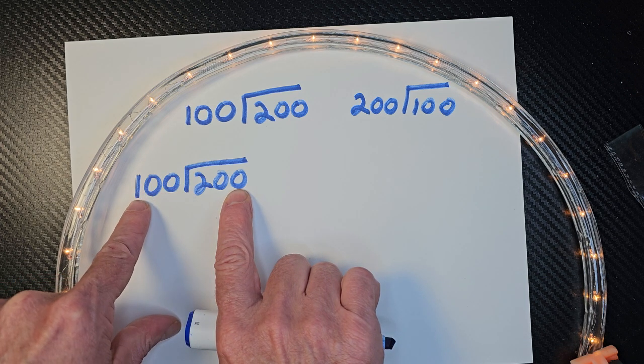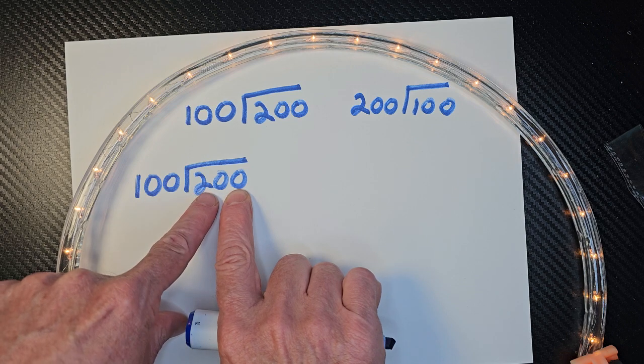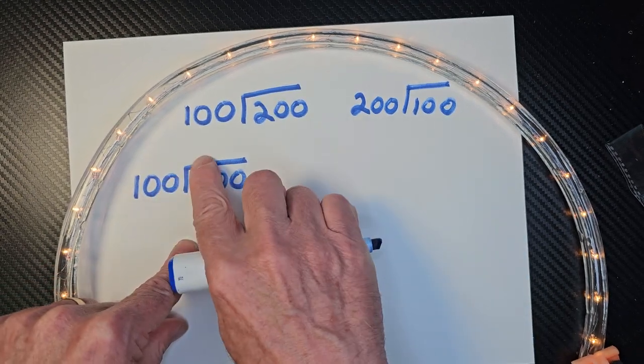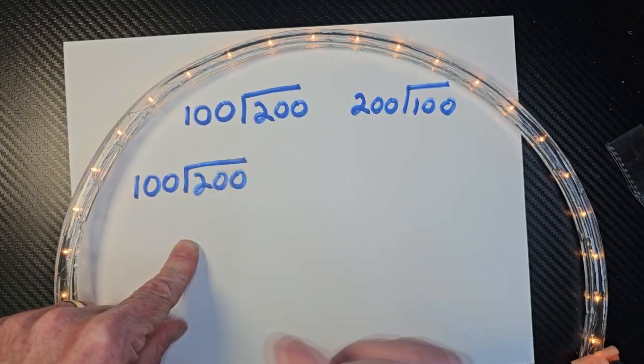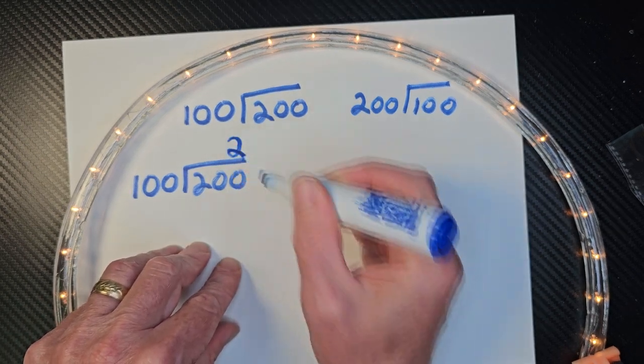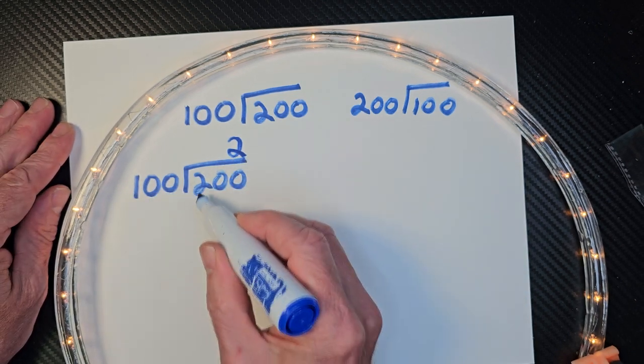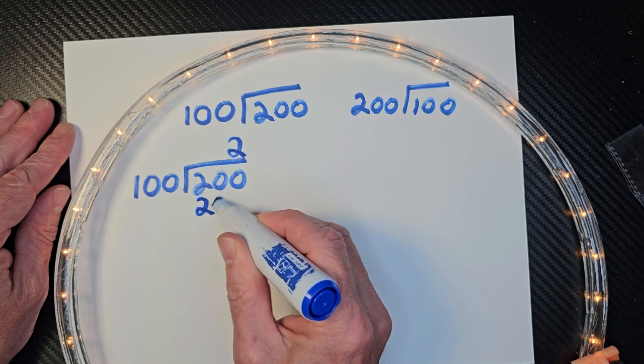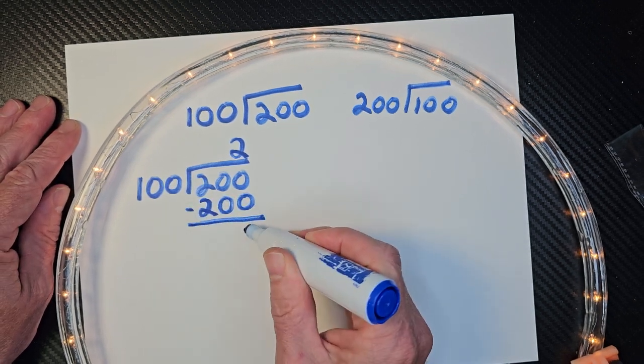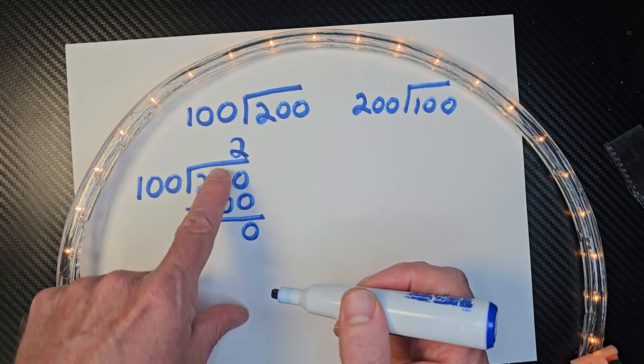All right, so I can take 100 times 2 would be 200. Now I'm trying to figure out where should I put that 2? Should I put it right here, right there, or right there? What do you think? I put the 2 right here, okay? So 2 times 100 would be 200. And then I subtract, and I have 0 remainder. So my answer right here would be 2.